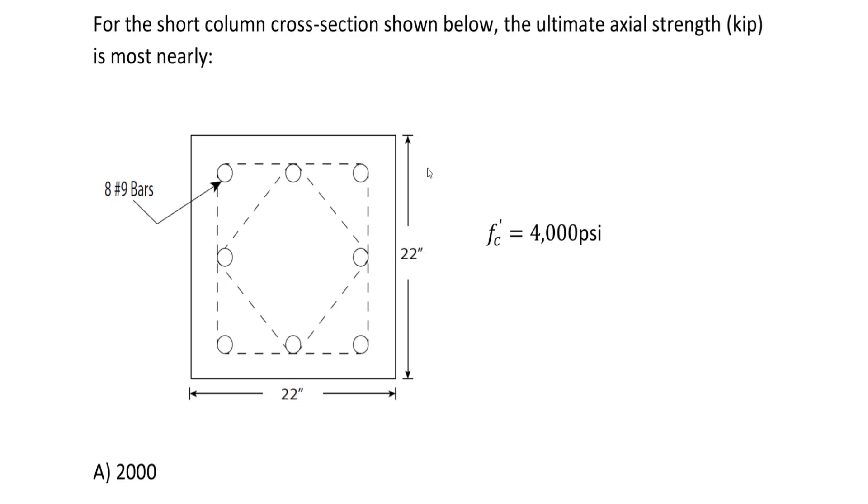For your FE exam, whenever you need the ultimate axial strength for a short column, you have to consider the phi factor. You can refer to the table for short columns on page 161.